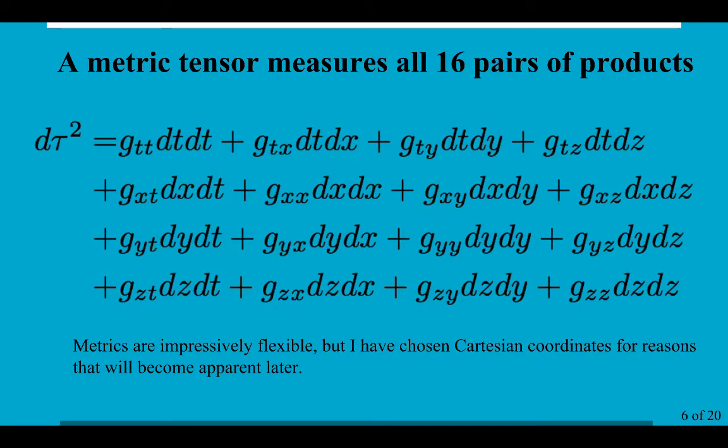Now, metrics are actually very general tools. Here are all 16 terms. And of course, they're very general. You can use, for example, spherical coordinates. If you do that, then the g will depend on radial distance and where you are in space-time affects the g that you get to use. I have actually chosen to write this all out in Cartesian coordinates for very specific reasons we'll get to soon.